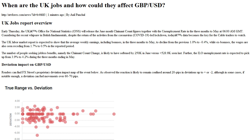By Anil Panchal. UK jobs report overview. Early Thursday, the UK's Office for National Statistics (ONS) will release the June month claimant count figures together with the unemployment rate in the three months to May at 06:00 AM GMT.